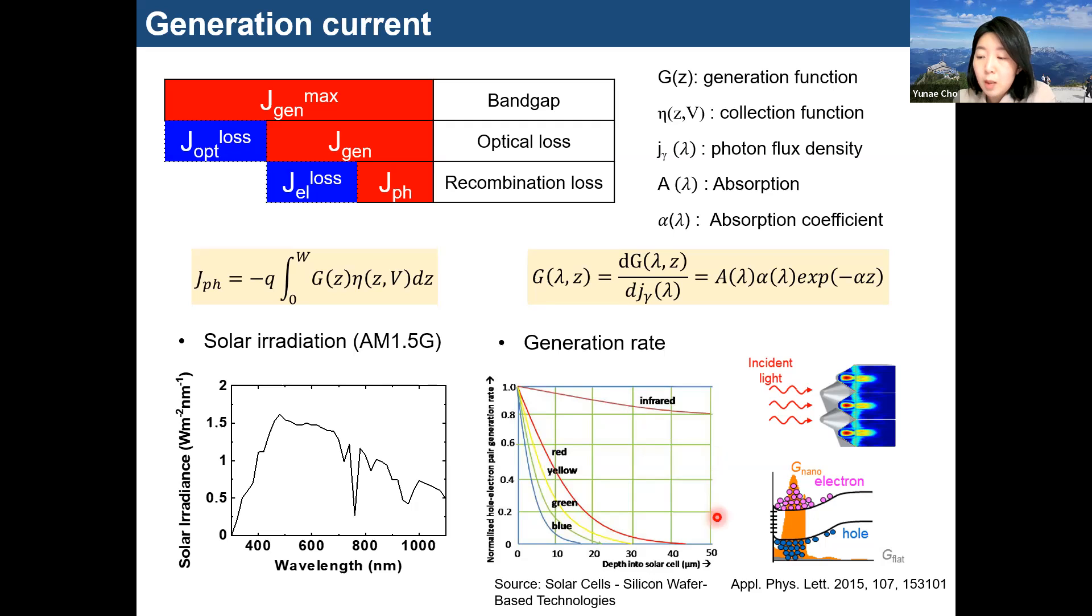For reference, the generation rate is mainly mentioned in studies related to light absorption and focusing. As shown in the figures on the right, it is the result of studying how light is focused on the surface and how it affects the collection of carriers when the carriers have spatial distributions by the nanostructure at the surface. As shown, it is my own paper in 2015.